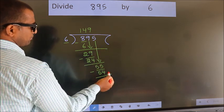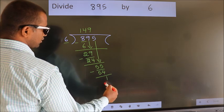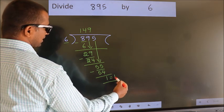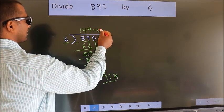No more numbers to bring down, so we stop here. This is our remainder. This is our quotient.